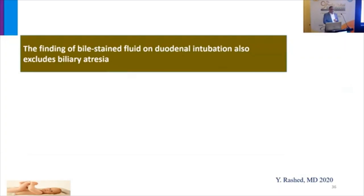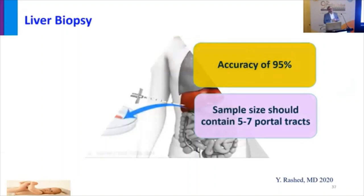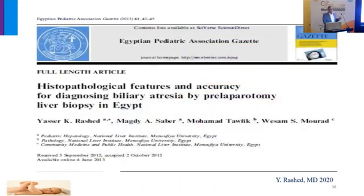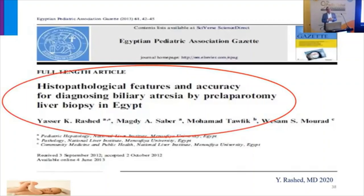Some centers perform bile-stained duodenal aspirate and test for conjugated bilirubin — if positive, this rules out biliary atresia, but this is not done in all centers. Liver biopsy is also a very important tool for diagnosis of biliary atresia, with accuracy of 95% or more. However, a proper sample is very important — at least 5 to 7 portal tracts are needed. This is one of the studies done at our university to assess sensitivity and specificity of liver biopsy in diagnosing biliary atresia, finding that certain histopathological features carry more than 97% specificity.